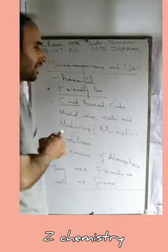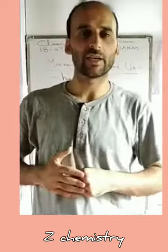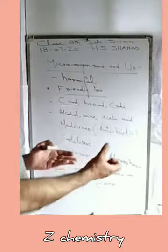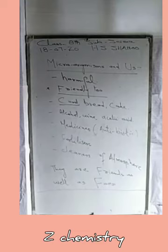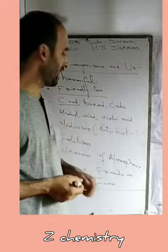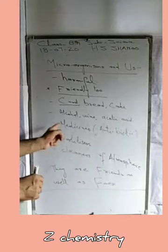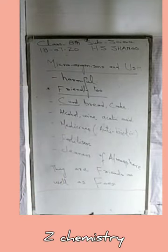Microorganisms are also used to make medicines, specifically antibiotics. Antibiotics are medicines used to treat dangerous diseases. For example, penicillin is an important antibiotic produced using microorganisms.